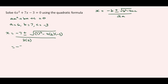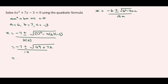This gives us negative 7 plus or minus the square root of 49 — then 4 times 6 is 24, times negative 3 is negative 72. But we have a negative times a negative, so that becomes plus 72 — all over 12. So this is negative 7 plus or minus the square root of 121 over 12.